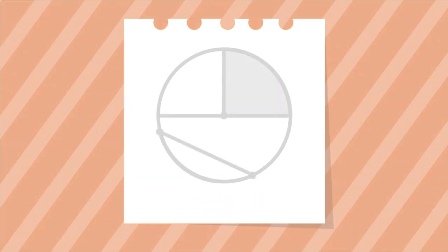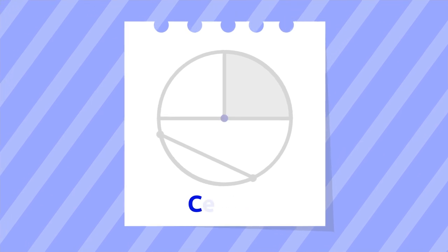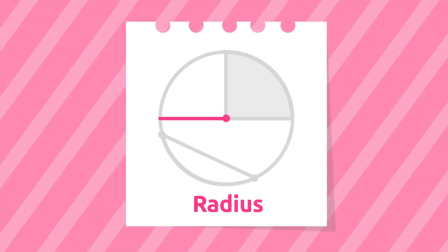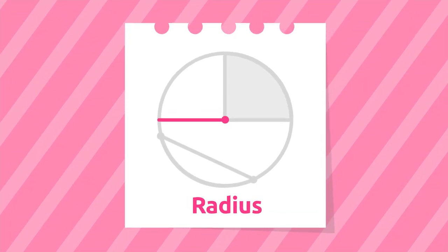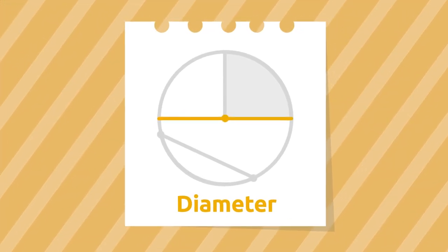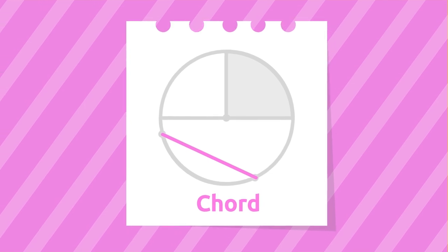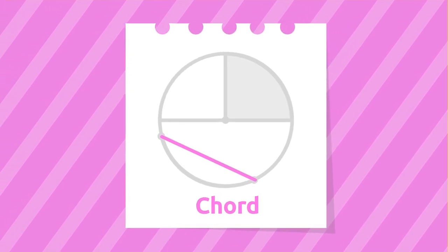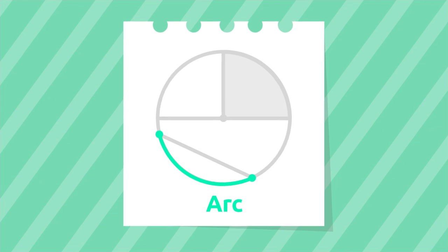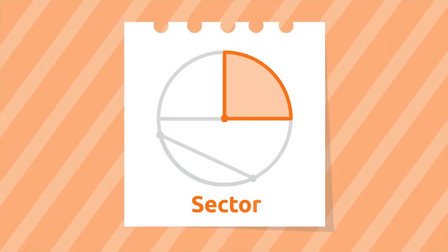Let's recap the parts of the circle and the circumference: the center, the radius, the diameter, the chord, the arc, and the sector.